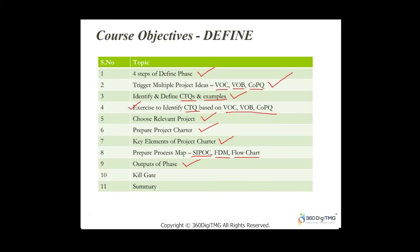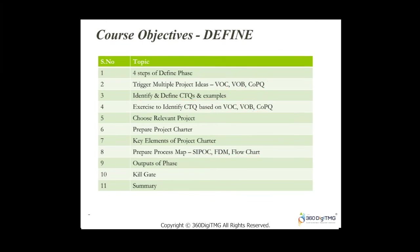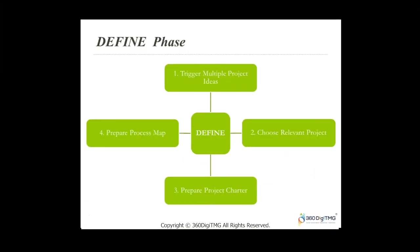We'll look at key elements of the project charter and come up with a high-level process map using SIPOC — Supplier, Input, Process, Output, and Customer — or a Functional Deployment Map, and also a basic flowchart. Finally, we'll look at the outputs of the phase, the kill gate review, a quick summary recap, and then move on to the next major phase.